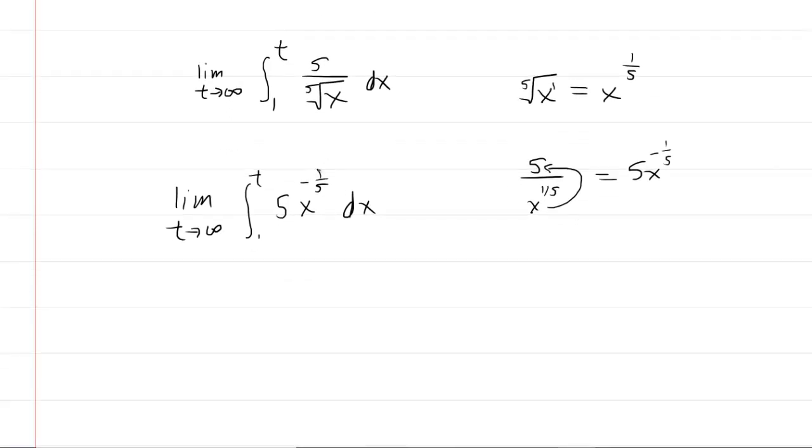This is a basic power rule. So we're going to take the exponent and add 1 to it. That becomes x raised to the 4 fifths. And then I like to multiply by the reciprocal in the front. So the reciprocal of 4 fifths is 5 fourths. Don't forget that you had a coefficient of 5 in front already. And this will be evaluated from 1 to t. Why don't we go ahead and just multiply 5 times 5 fourths. So we just multiply the 5s. This gives us 25 fourths. So we can save ourselves a little step right there.